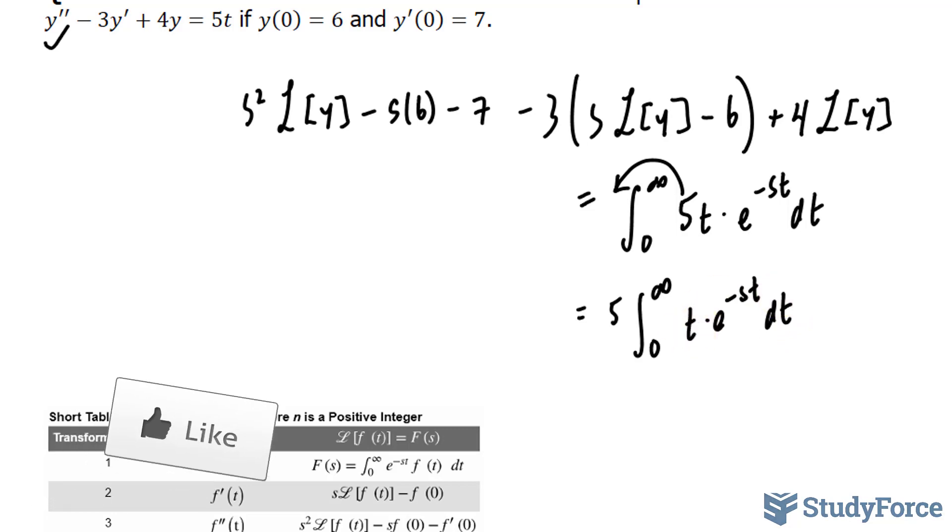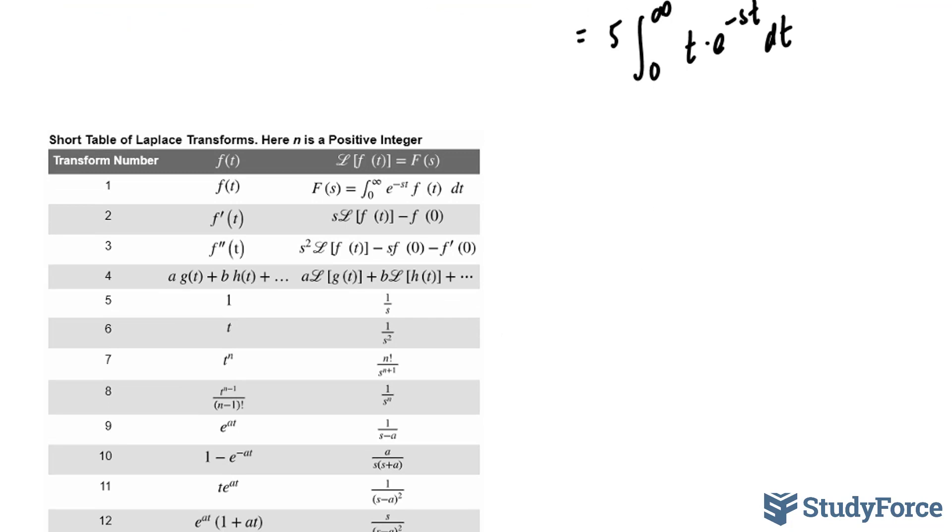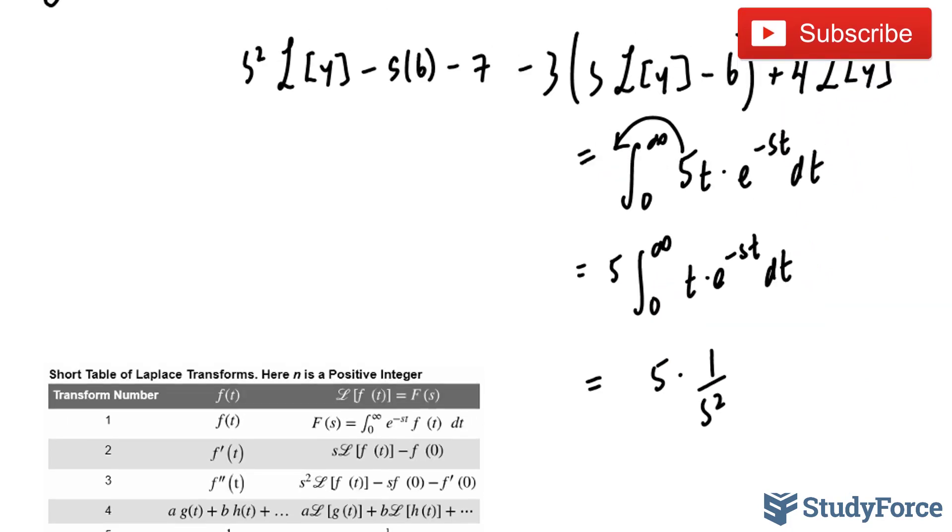Instead of going through integration by parts, I'll use this list of known Laplace transforms. If you look at number 6, if our function is t·e^(-st), this is our answer. So we have on the right side 5 times 1/s², which gives 5/s².